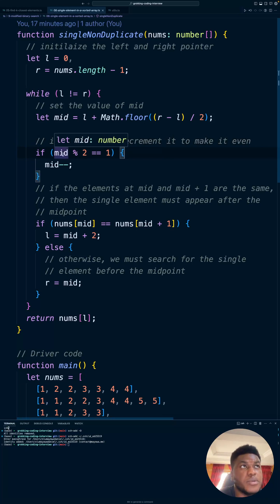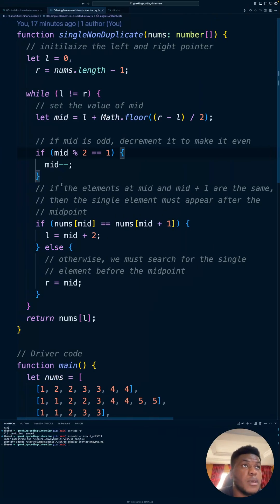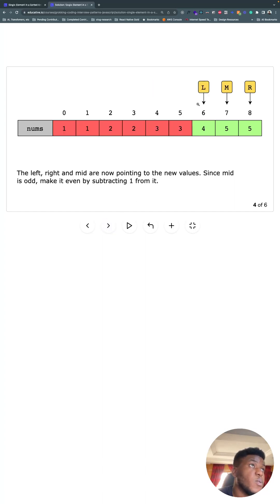If mid is odd, decrement it to make it even. That's what this is—the modular operator. So if the remainder is one then we know that it is odd, so decrement it because what's right before it is going to be even. In our case it landed at an even number so we're fine. Then if the elements at mid and mid plus one are the same, then the single element must appear after the midpoint. So if what's at mid and what's at mid plus one over here are the same, then we can move left two steps after mid, which is what happens. What's here—three—is equal to three over here. Mid four, four plus one five, what's at there, they're equal. So we can move left to two steps after. One, two over here. So that's why left wound up here.